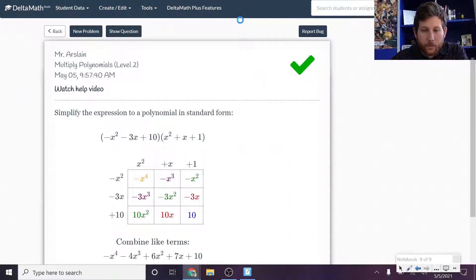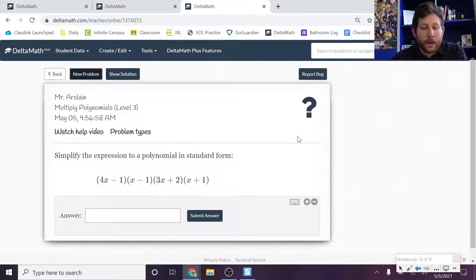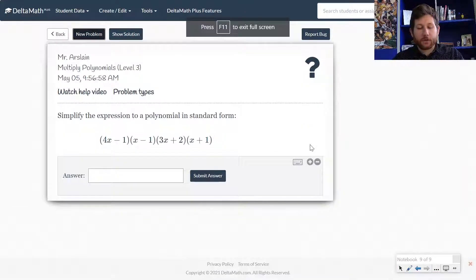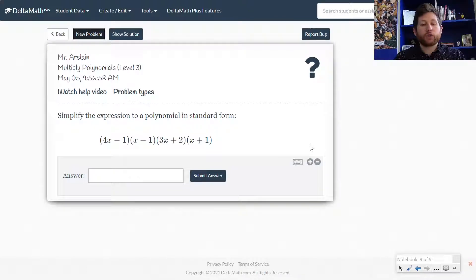All right, so let's look at one more here. We're not going to solve this the whole way. We're just going to kind of take this in pieces and talk about it, and we'll kind of show you how they do it. So notice in this case, instead of having two trinomials, we just have four binomials,